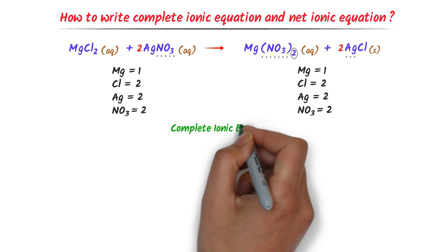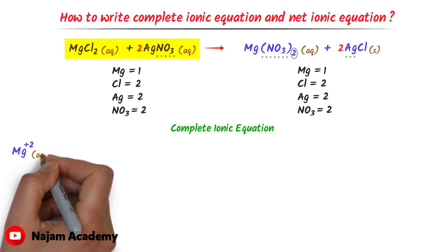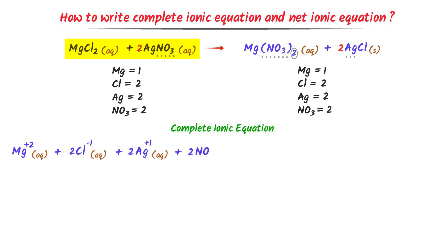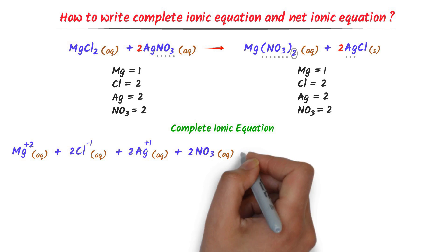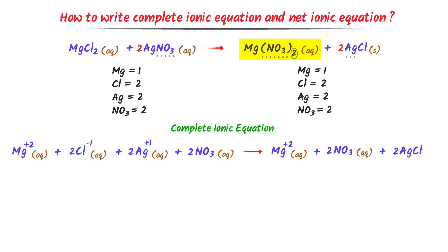The last step is to write the complete ionic equation and net ionic equation. To do so, I write separately the ions of each aqueous-state compound. For example, magnesium chloride is in aqueous state, so I write their respective ions. At the left-hand side: Mg²⁺ + 2Cl⁻ + 2Ag⁺ + 2NO₃⁻. At the right-hand side: Mg²⁺ + 2NO₃⁻ + 2AgCl(s). This is the complete ionic equation.